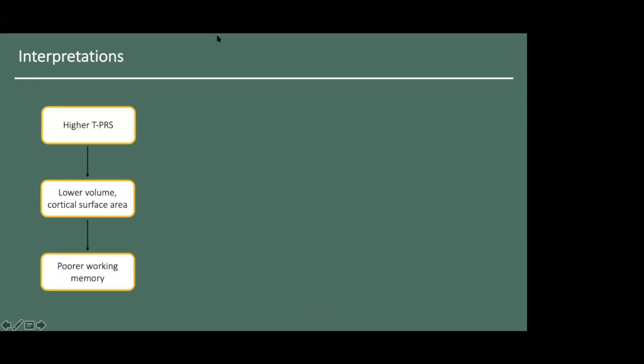In summary, we found that higher TPRS, indicating more depression-like gene expression, was associated with lower site-specific volume or surface area, which in turn was associated with poorer working memory.